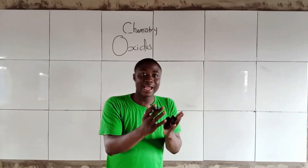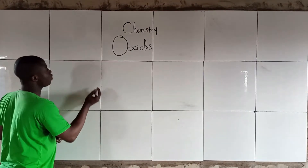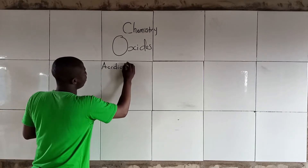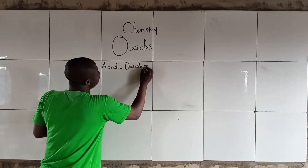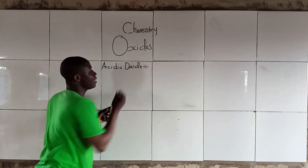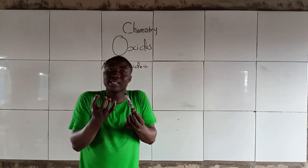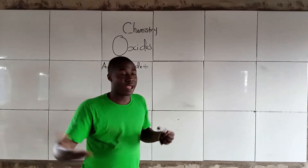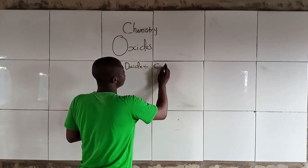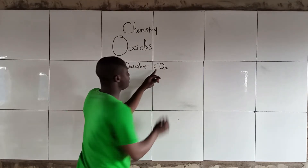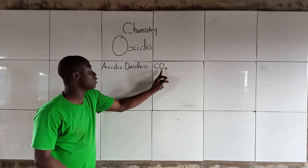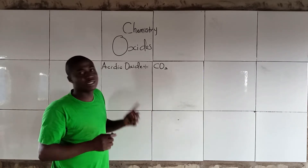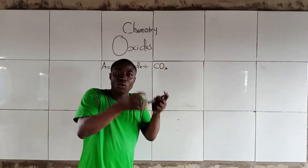We have different kinds of Oxides. The first type I shall explain is Acid Oxides. Acid Oxides are oxides of a non-metal combining with oxygen. For example, carbon and oxygen give CO2, which is an example of an Acid Oxide, because oxygen combined with a non-metal, which is carbon. An Acid Oxide is an oxide of a non-metal.